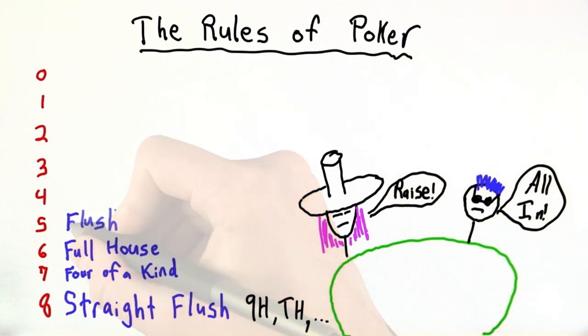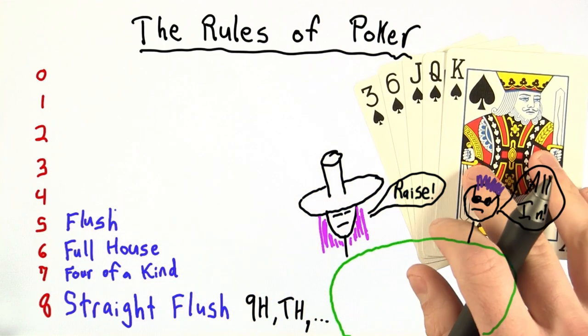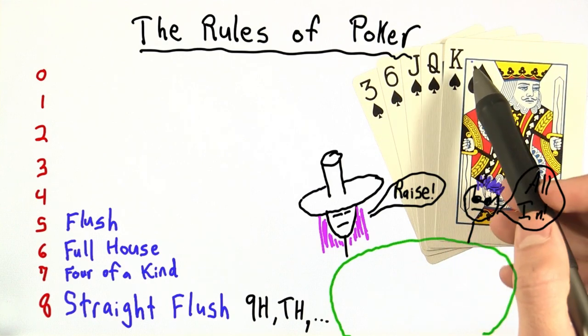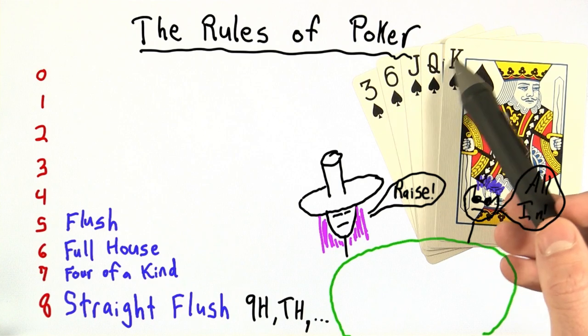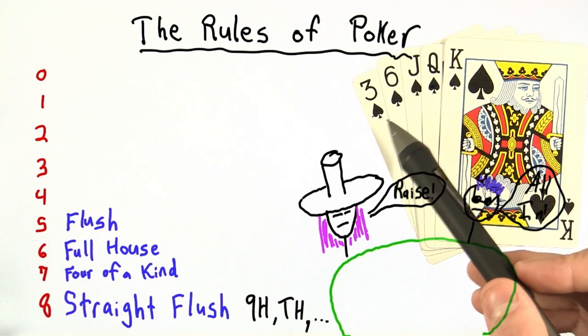Next is the flush. And a flush is five cards of the same suit. And here the ranks don't matter. You can see we have a three, six, jack, queen, and king. But they're all of the suit spade.